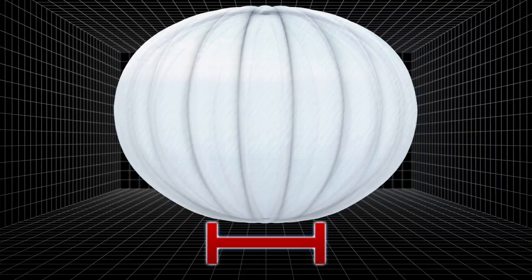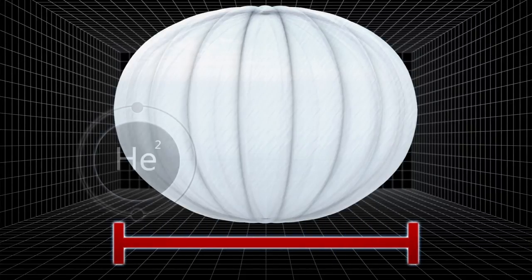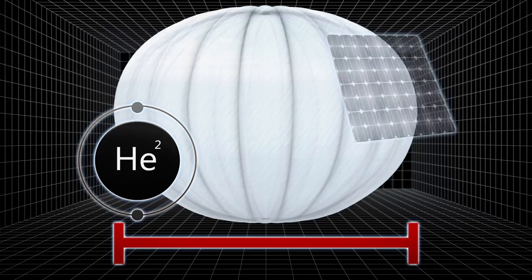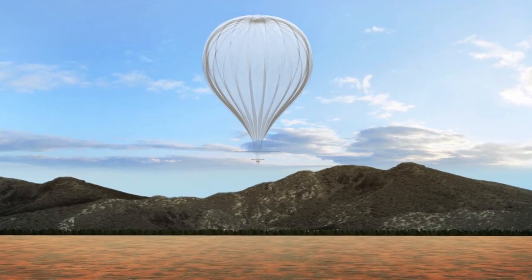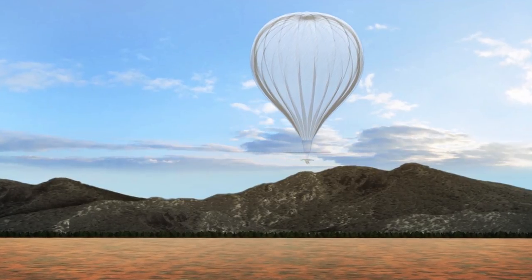The BBC reports Loon's internet balloons are the size of a tennis court and are made of polyethylene. It's also filled with helium and uses a solar panel for power. The balloons will fly in the stratosphere around 20 kilometers above sea level.